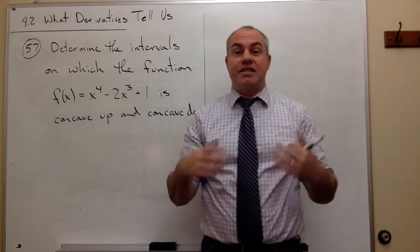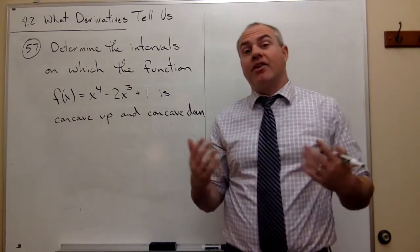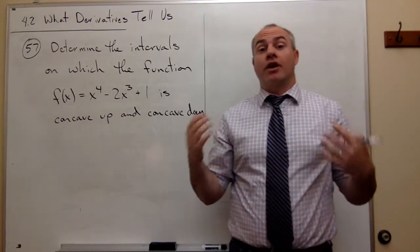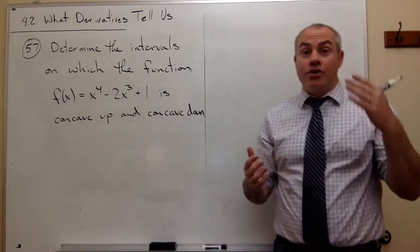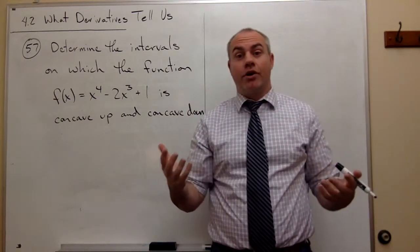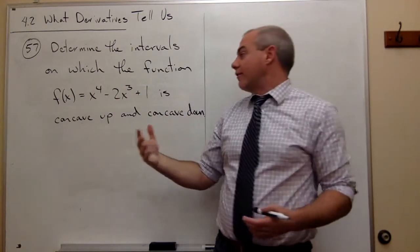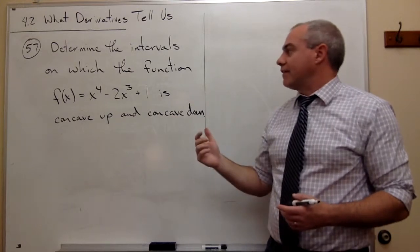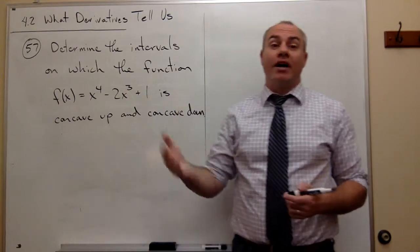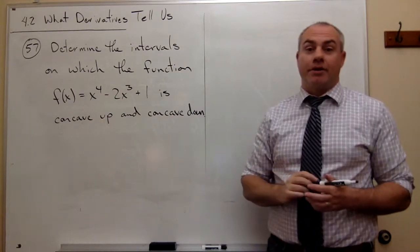I like to call these 'second order critical values' just to remind myself that they're not actually the critical points of a function, because the critical points of a function are critical points for the first derivative, not the second derivative. So I'll call them second order critical values. To find these and figure out where things are concave up and concave down, I need the second derivative of this function.